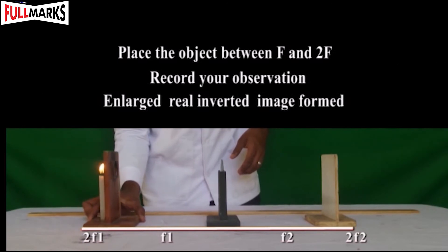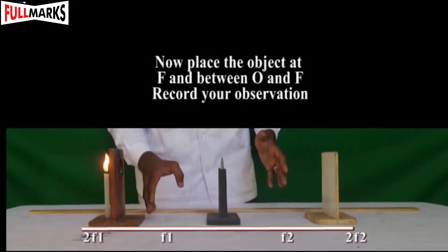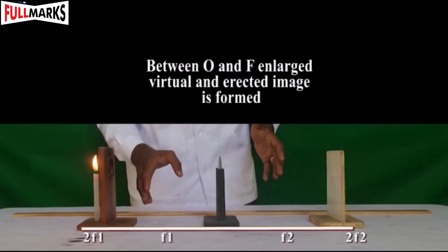Now, shift the object between F and 2F and record the observations. Place the object between O and F of the lens and record your observations.